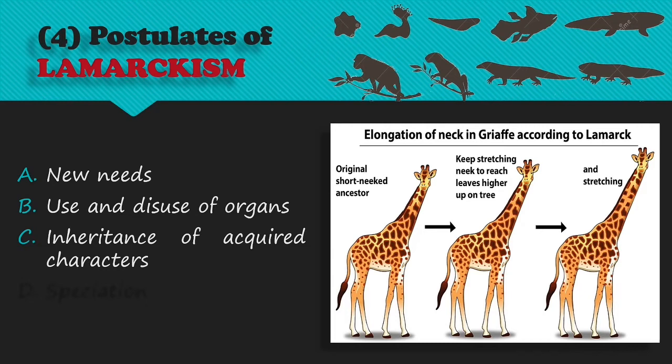Fourth, speciation: Lamarck believed that in every generation new characters are acquired and transmitted to the next generation. These new characters accumulate generation after generation, and after a number of generations, a new species is formed.